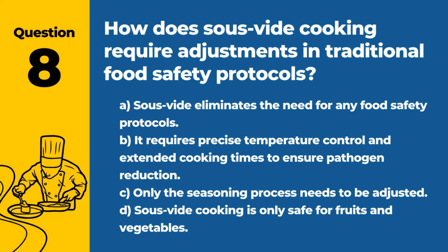Question 8. How does sous vide cooking require adjustments in traditional food safety protocols? a. Sous vide eliminates the need for any food safety protocols. b. It requires precise temperature control and extended cooking times to ensure pathogen reduction. c. Only the seasoning process needs to be adjusted. d. Sous vide cooking is only safe for fruits and vegetables. Answer: b. It requires precise temperature control and extended cooking times to ensure pathogen reduction. Sous vide cooking demands strict adherence to temperature and time to ensure safety.